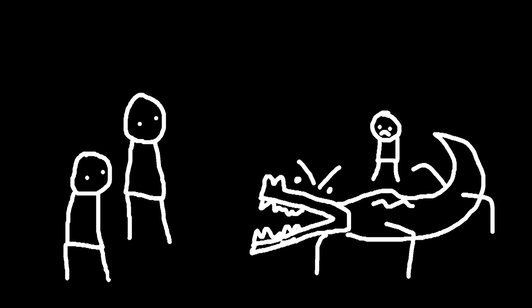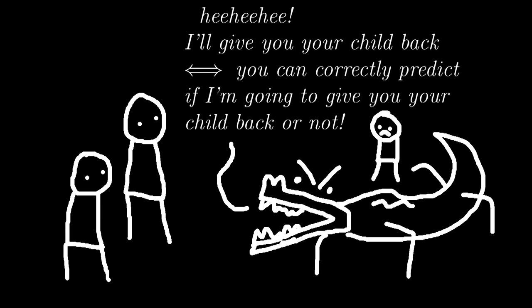Let's say a crocodile kidnaps a child. The crocodile then goes to the kid's parents and says: 'I'll give you your child back if and only if you can correctly predict if I'm going to give you your child back or not.' So, assuming the parents do actually want their kid back, what should they predict?